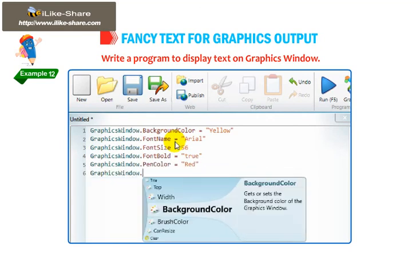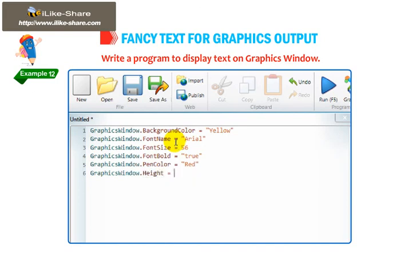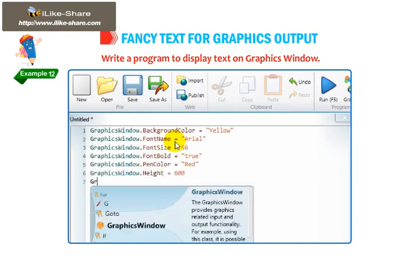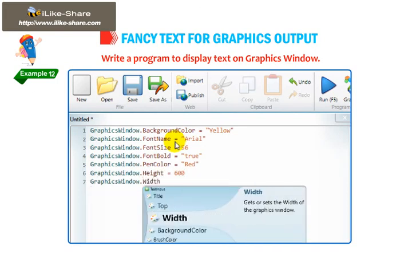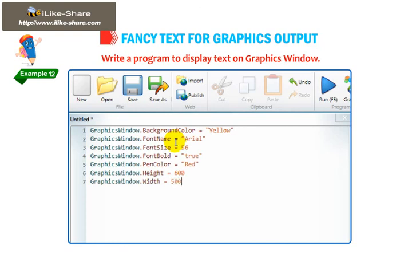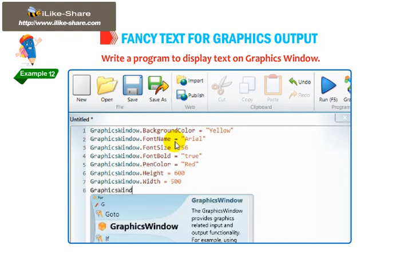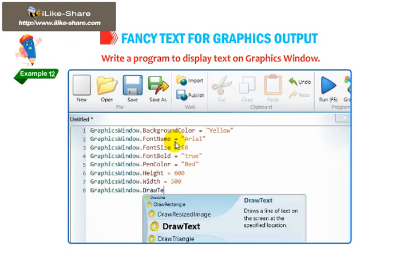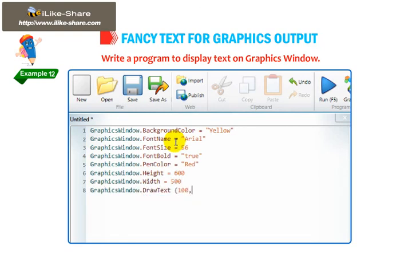GraphicsWindow.Height = 600. GraphicsWindow.Width = 500. GraphicsWindow.DrawText(100, 100, "Text").